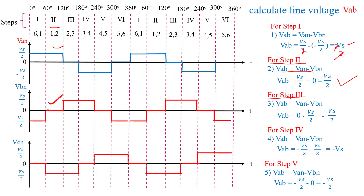For step 4: VAB equals VAN minus VBN. From the waveform, VAN equals minus Vs/2 and VBN equals plus Vs/2. Substituting: minus Vs/2 minus Vs/2 gives minus Vs. For step 5: VAB equals VAN minus VBN. VAN equals minus Vs/2 and VBN equals 0, so VAB equals minus Vs/2.